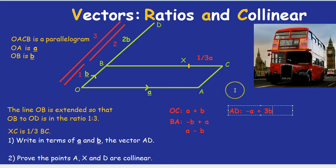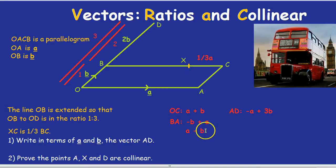Question two. Here's a real A-star question. Prove the points A, X, and D are collinear. Collinear is a fancy name. It just means they're all on the same straight line. So if you drew a line from A to D, it would cut through X. How do you prove points are collinear?